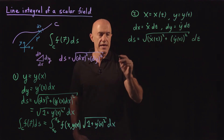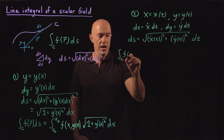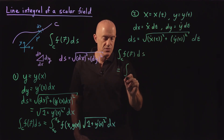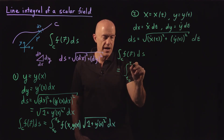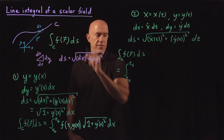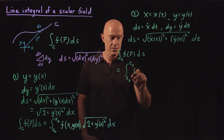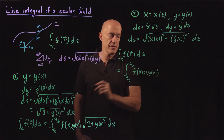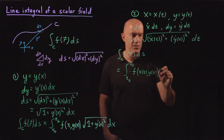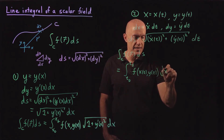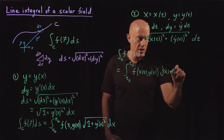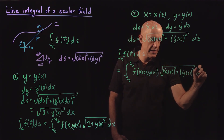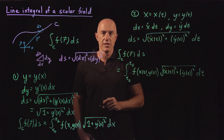We can write the element of the curve ds as the square root of x-dot squared plus y-dot squared, times dt. So the integral along the curve of f of r ds, written in terms of parameter t, is the integral from the initial value of t to the final value of t of f of x of t, y of t — a function of t — times the square root of x-dot of t squared plus y-dot of t squared, dt. A one-dimensional integral.